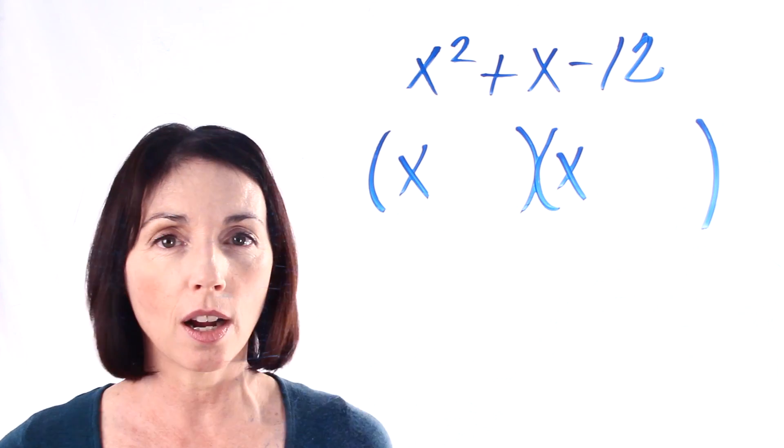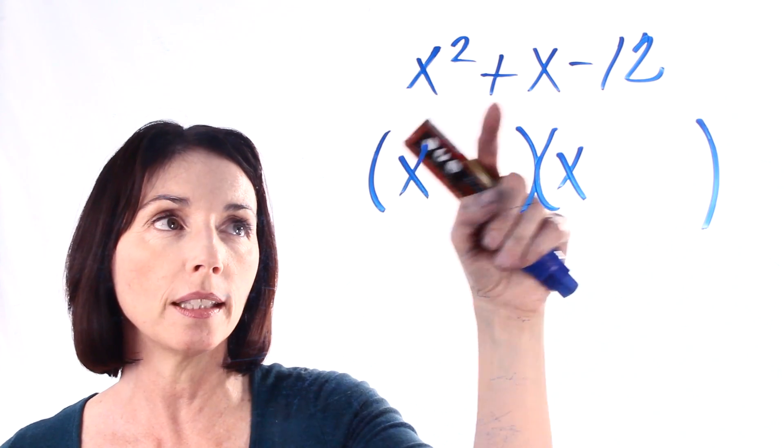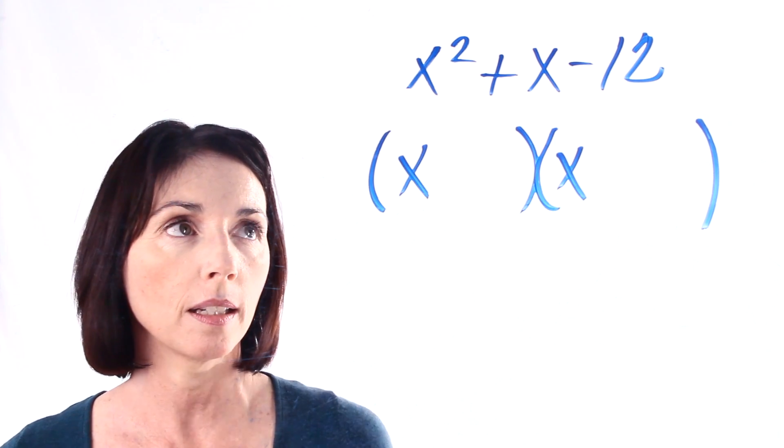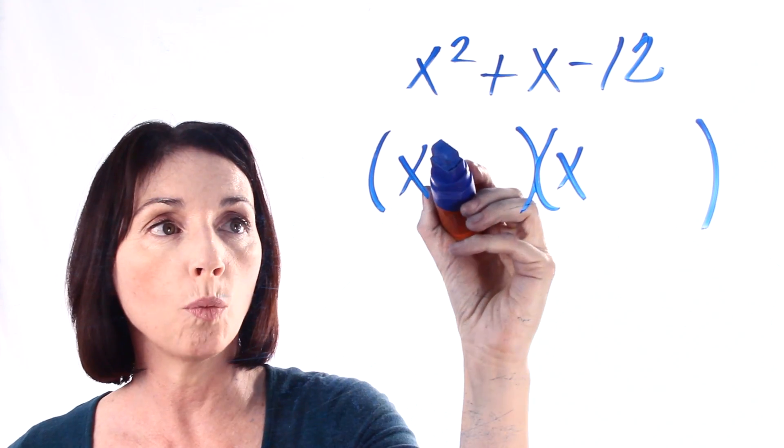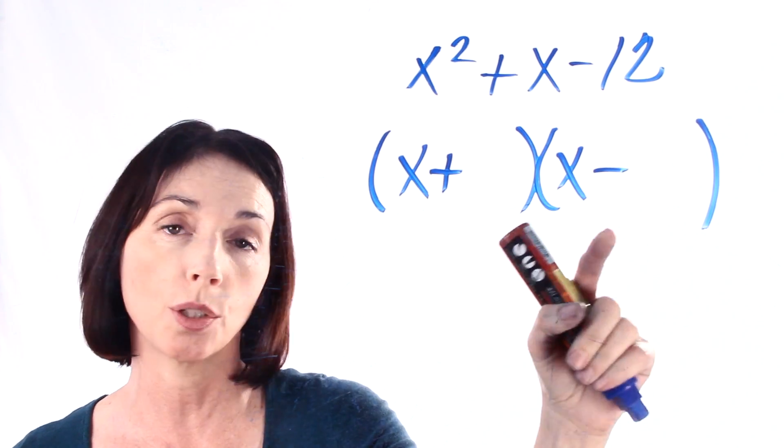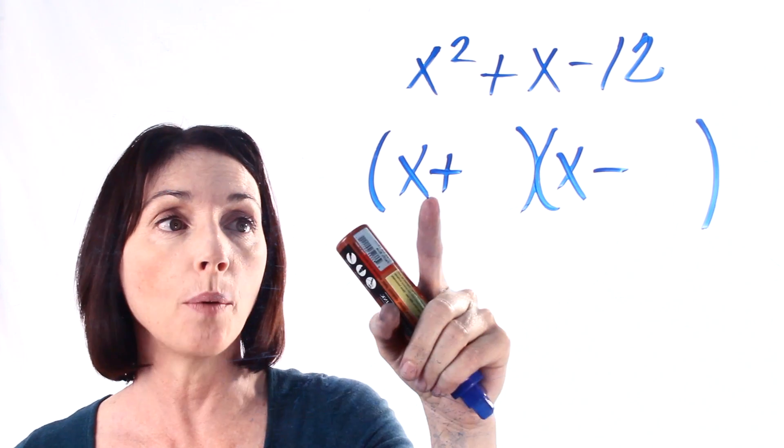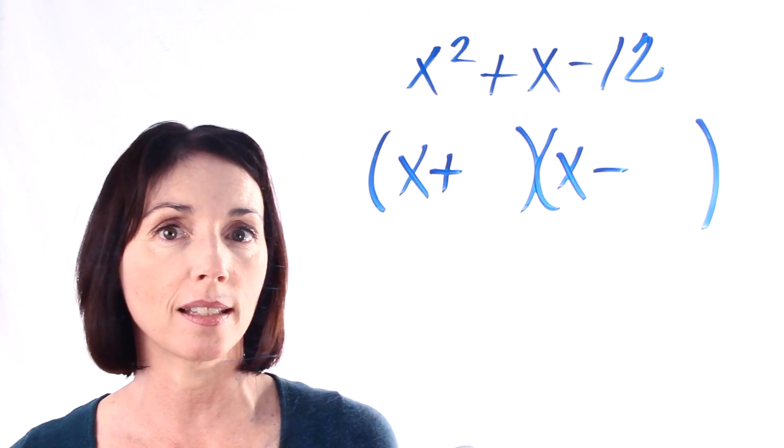Now at this point it's sort of hard to know where to go next. If you look at these signs it will give you a good hint. Since we have a minus sign here, it means that we're going to have one plus sign and one minus sign in our two parts of the expression. That way when we multiply together we'll get this negative.